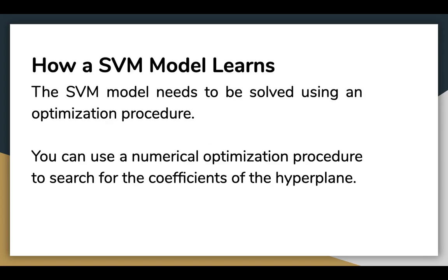The SVM model needs to be solved using an optimization procedure. You can use a numerical optimization procedure to search for the coefficients of the hyperplane. The most popular method for fitting an SVM is the Sequential Minimal Optimization method, which is very efficient. It breaks the problem into sub-problems that can be solved analytically by calculating, rather than numerically by searching or optimizing.